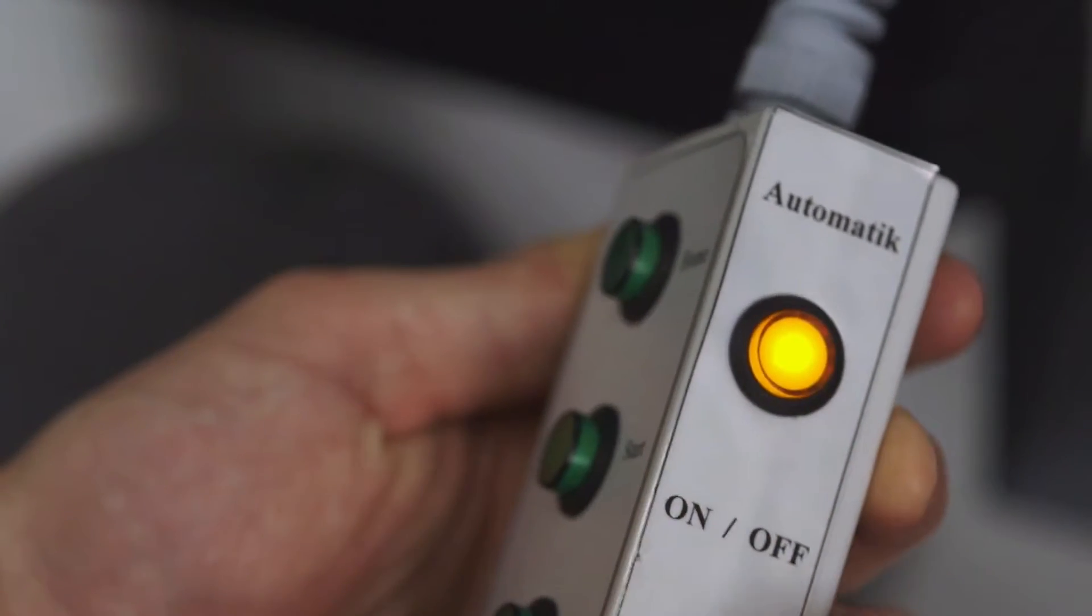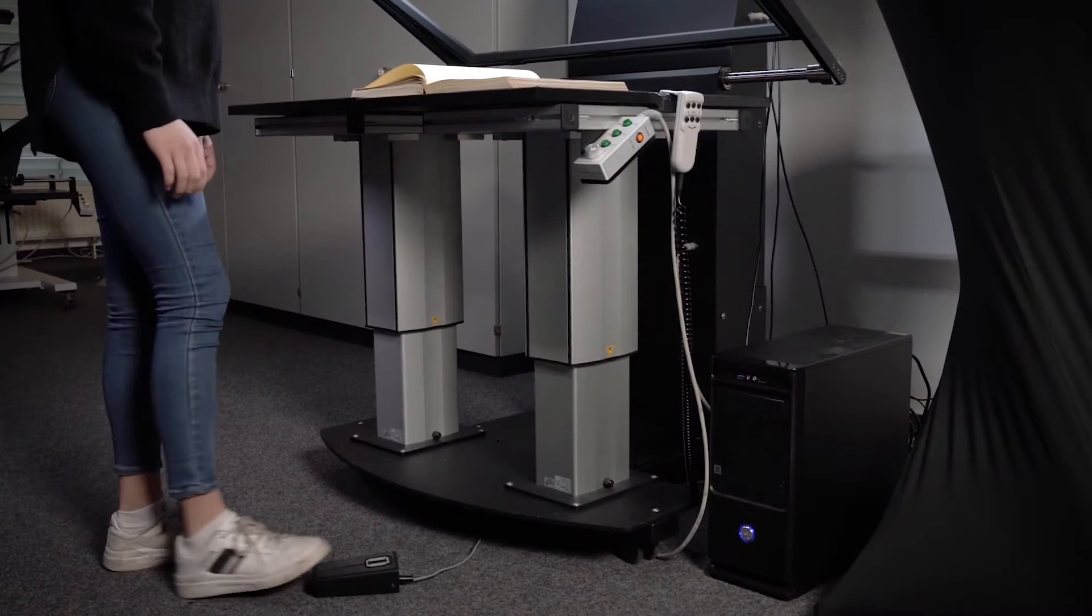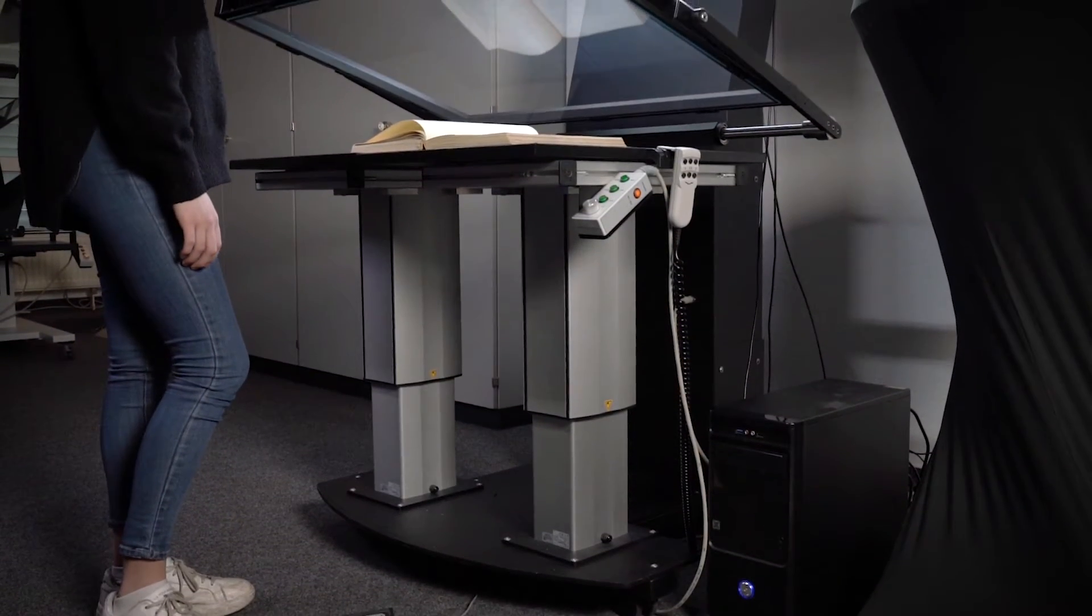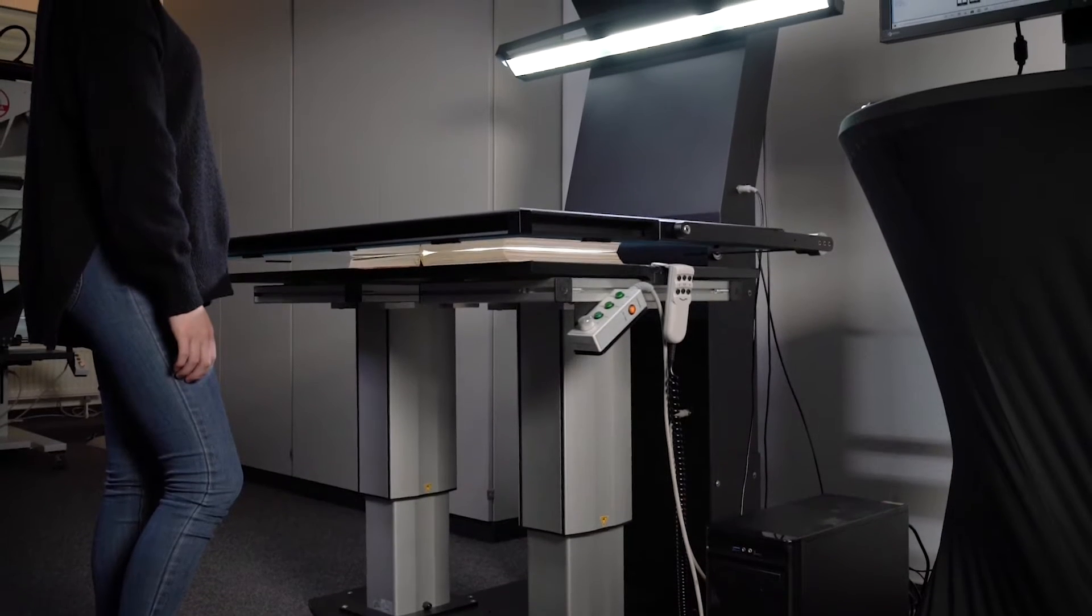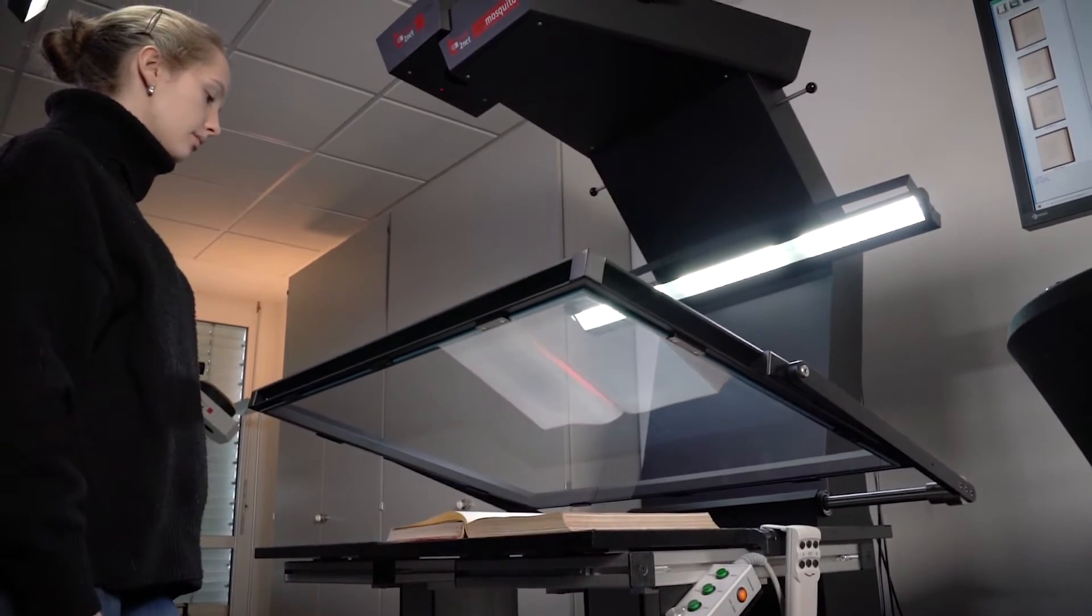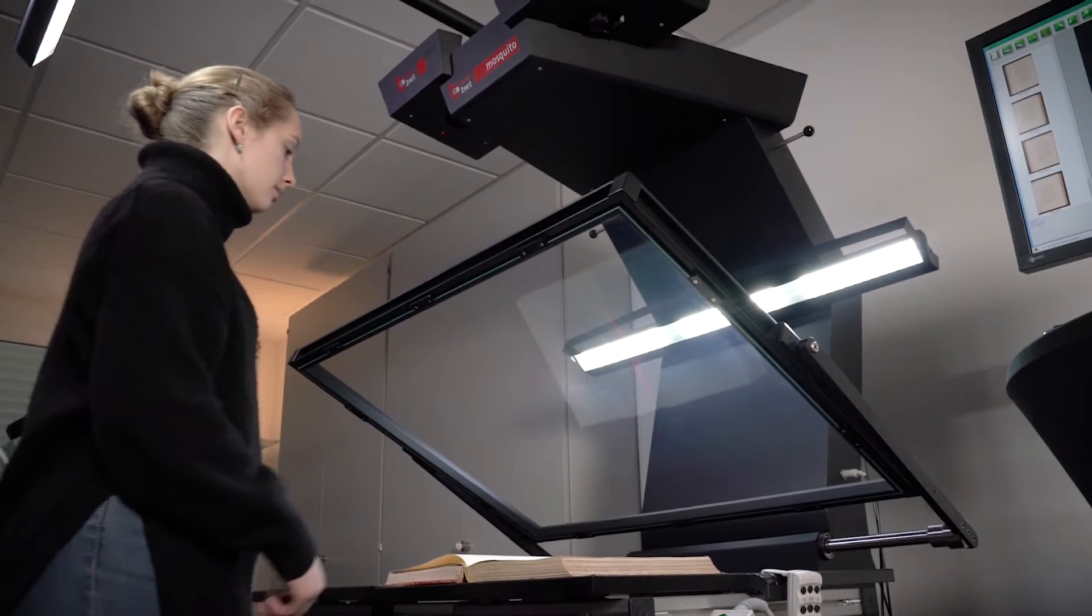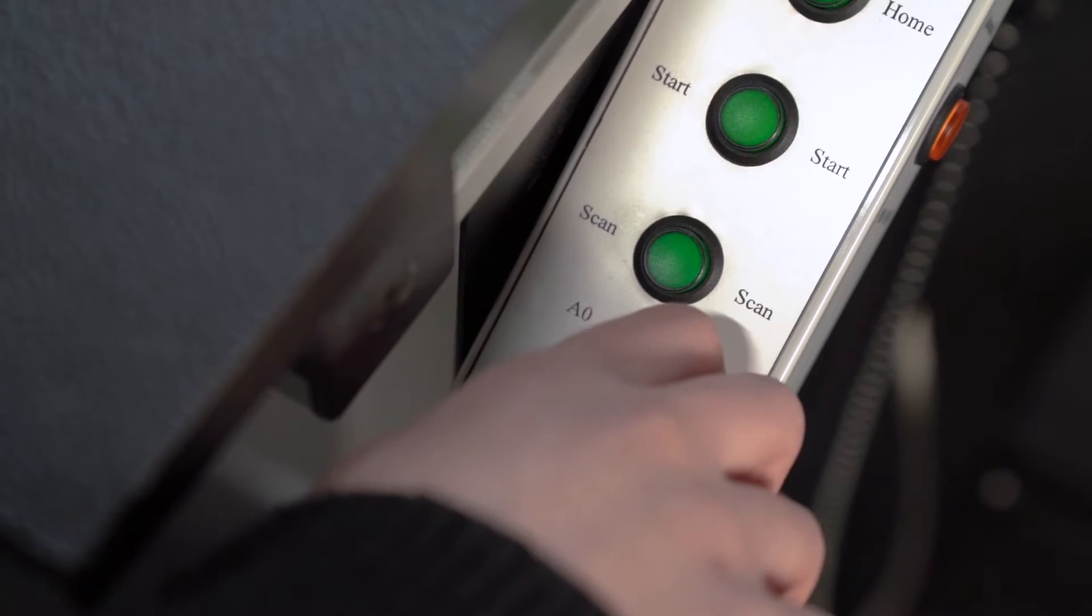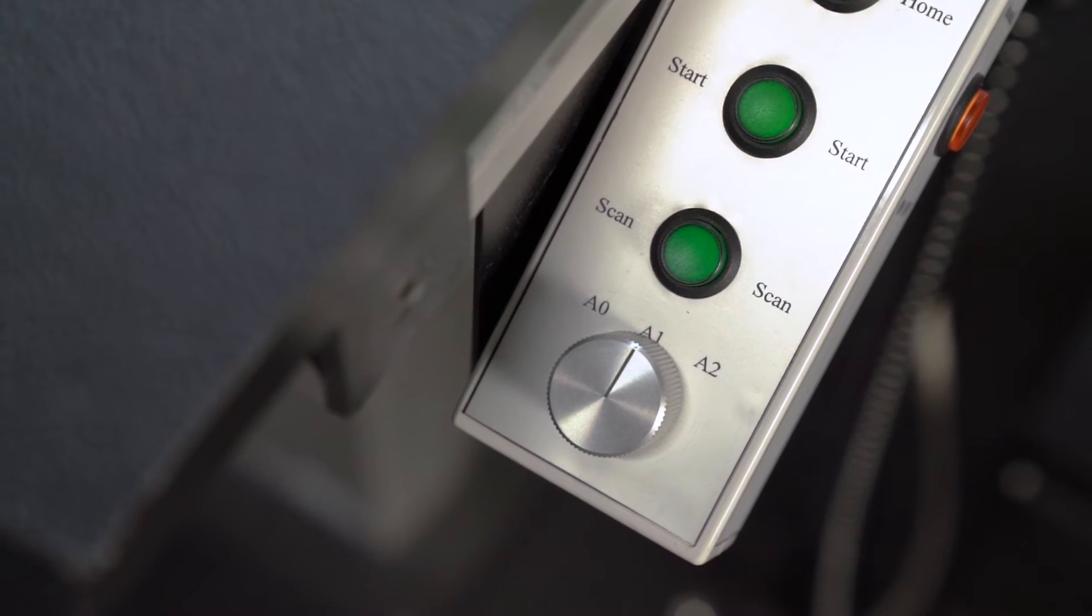In the third mode, the scanner is operated with the foot switch. After aligning the template, the foot switch is pressed and the glass plate moves down. The scan is taken automatically and the glass plate moves up again. For a faster workflow, the size of the templates can be set so that the glass plate opens only to a corresponding angle.